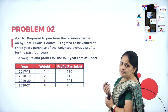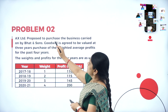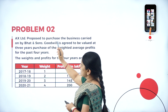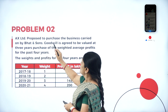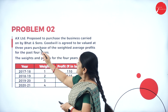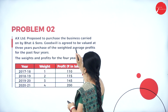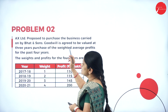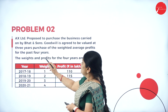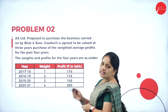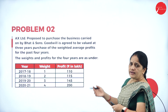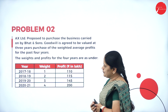The problem is: AX Limited proposed to purchase the business carried on by Bhatta and Sons. Goodwill is agreed to be valued at 3 years purchase of the weighted average profits for the past 4 years. The weights and profits for the past 4 years are given.